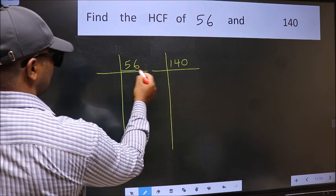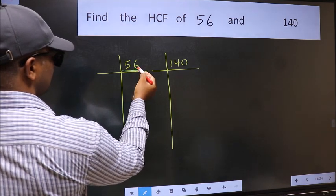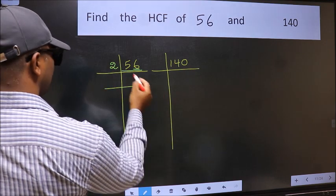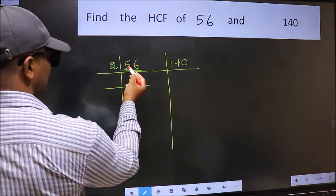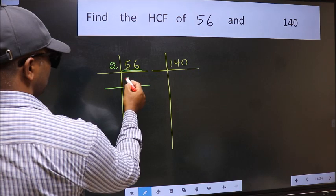First number 5. A number close to 5 in the 2 table is 2 times 2, which is 4. 5 minus 4 is 1.